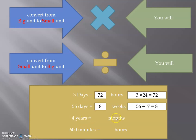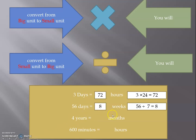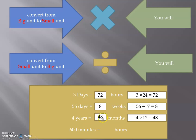4 years equals how many months? I want to convert from year to month — big to small — so I multiply. The first number is 4, and one year equals 12 months, so the second number is 12. Therefore, 4 times 12 equals 48 months. The 4 years is made of 48 months.